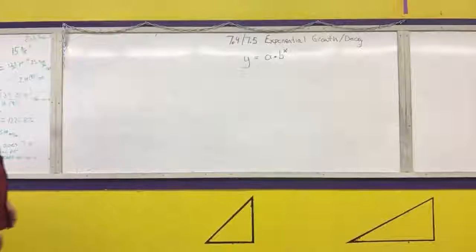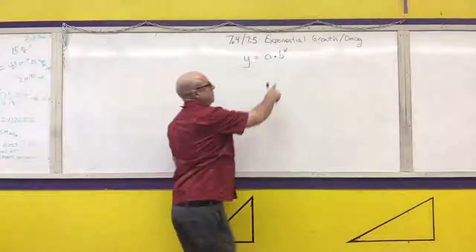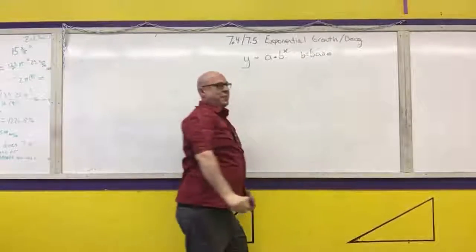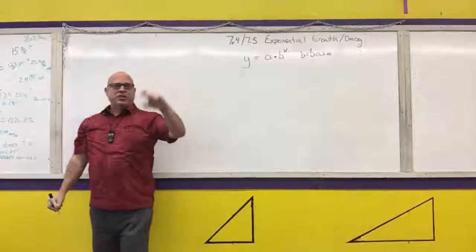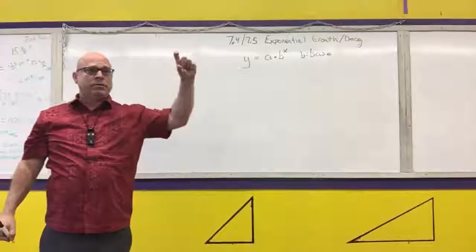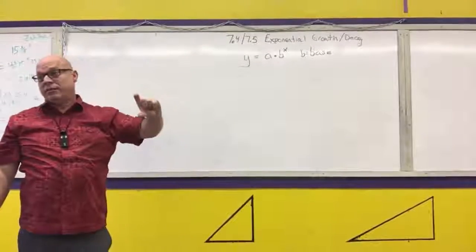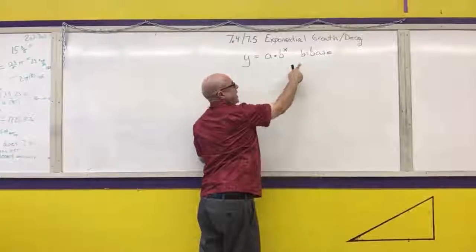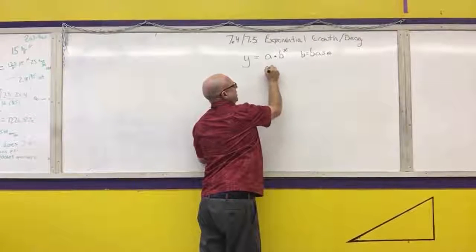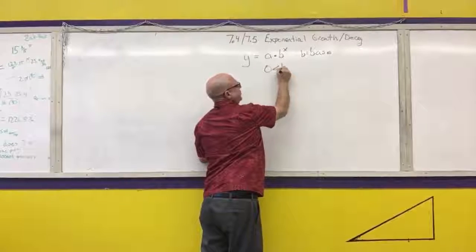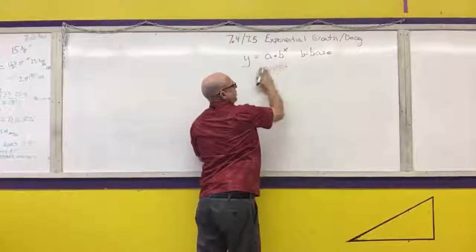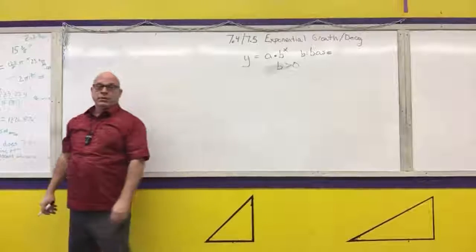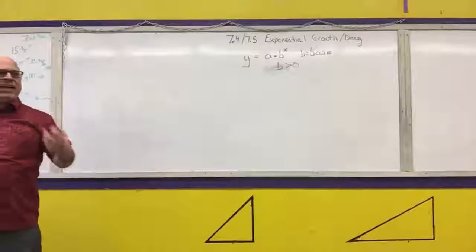There are restrictions on the letter b. B stands for base — like 2 to the x, or 2 cubed, where the base is 2. If it was 3 to the 7th, the base would be 3. So b is a number, and the first restriction is that the base has to always be greater than 0. Our exponential functions will not have a negative base.